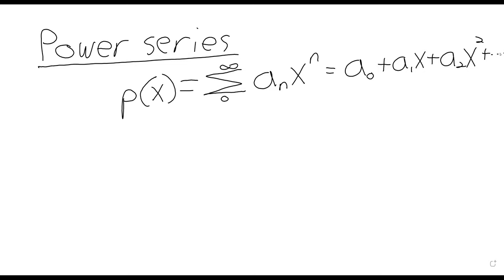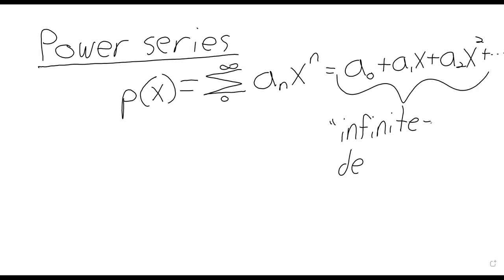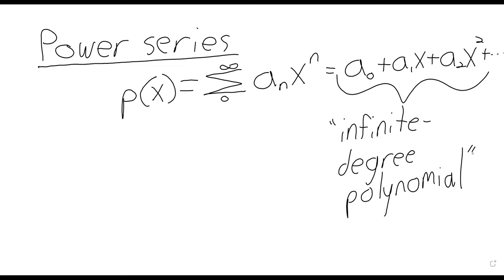A power series has the form a₀ plus a₁x plus a₂x² plus a₃x³, and so on. This has the form of a polynomial, but a polynomial stops at some point — you get aₙxⁿ where n is the degree. The power series never stops; it is essentially an infinite degree polynomial. Power series are going to be the real major application of these infinite series. They're extremely important.